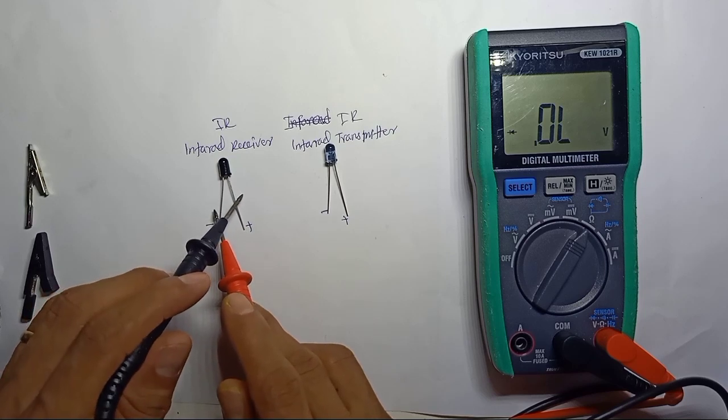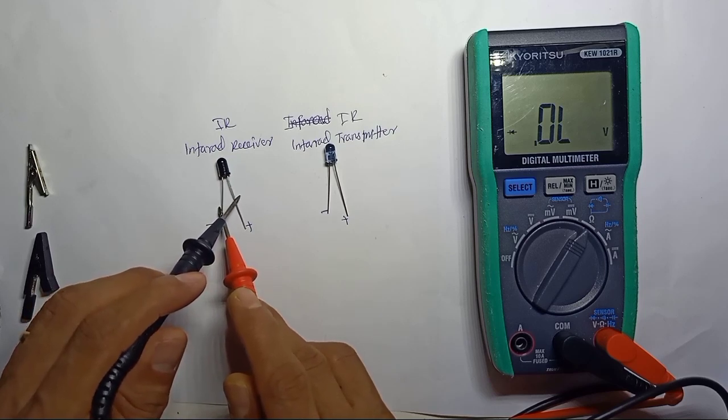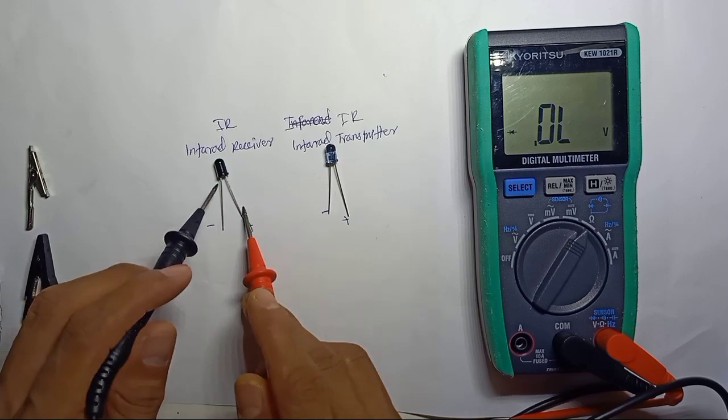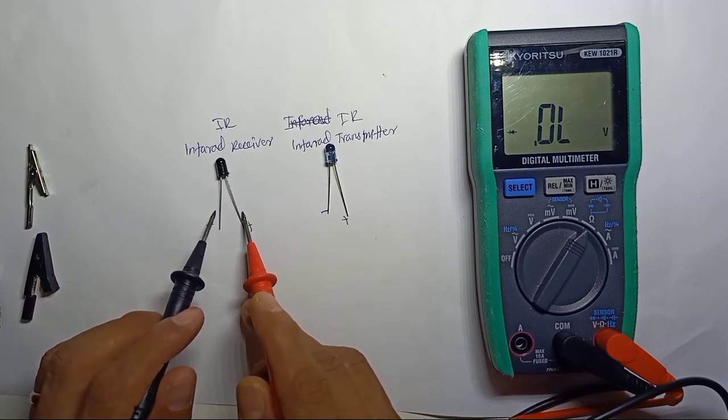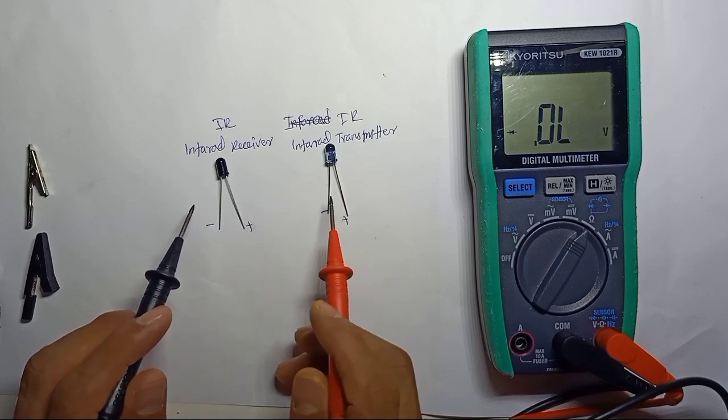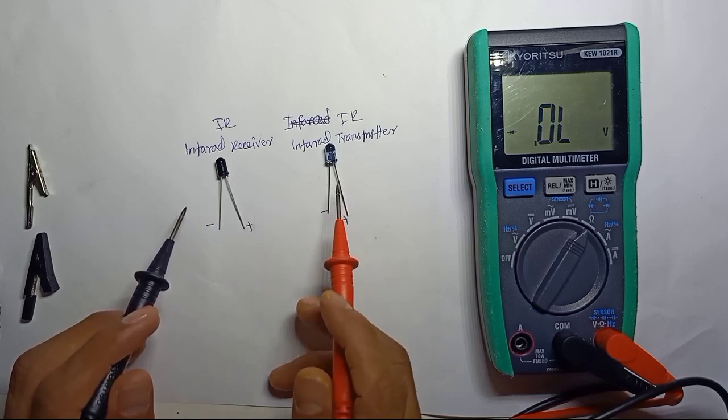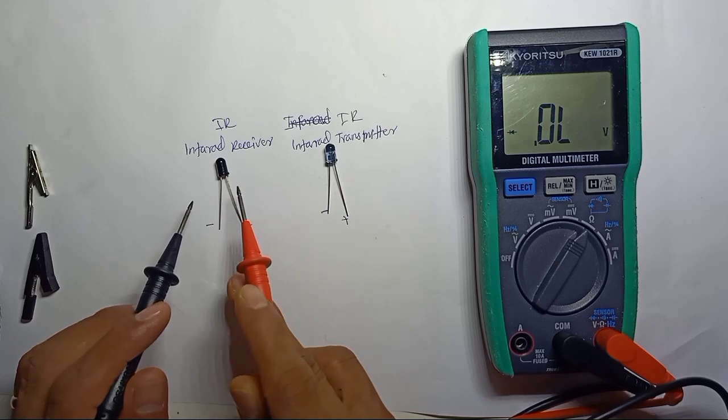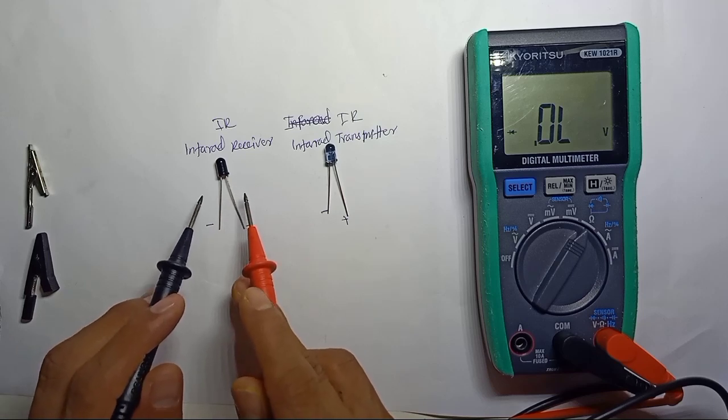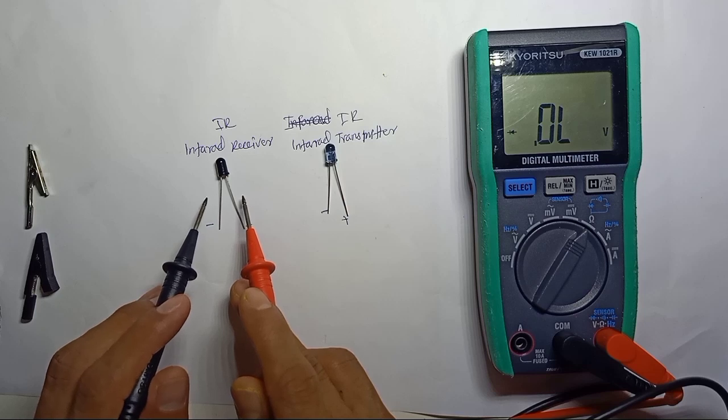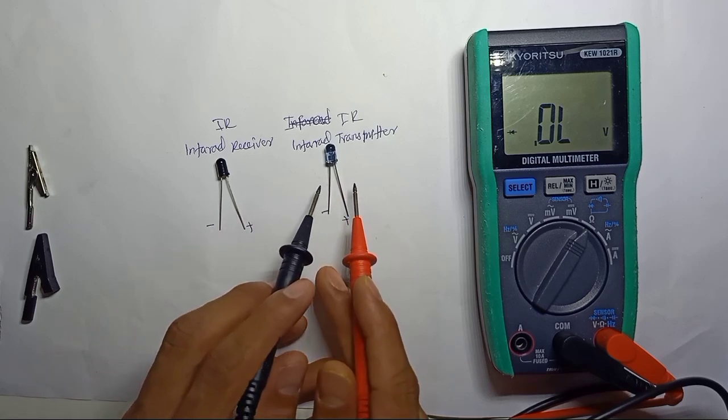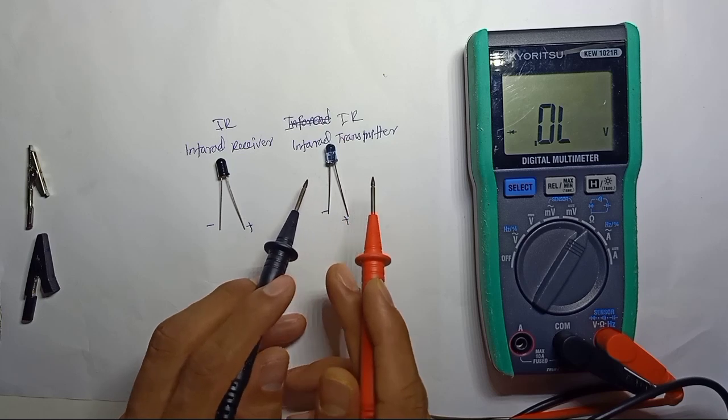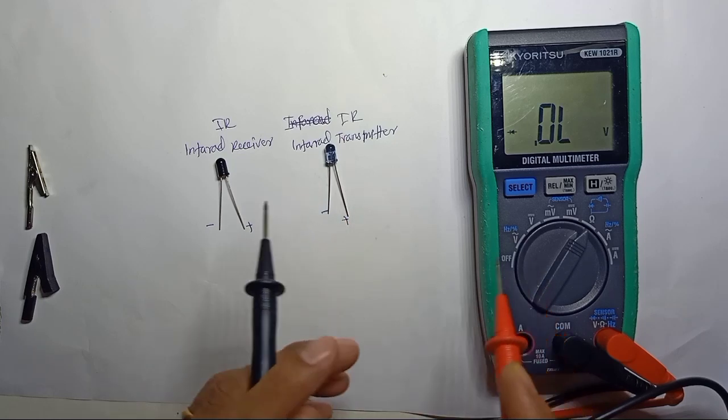Even though there is a positive pin and negative pin, we cannot check with diode voltage drop. The receiver will be activated by the signal. When the transmitter transmits the signal, the receiver will receive it and then produce the output. We cannot use the transmitter testing method. We have to select ohms, which is the resistor mode.